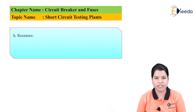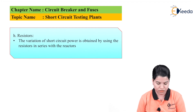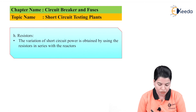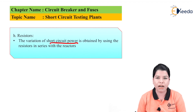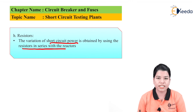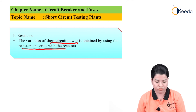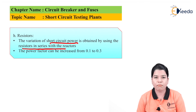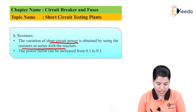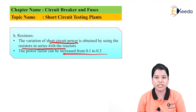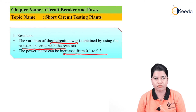Resistors are connected in series with reactors to obtain variation of short circuit power. The power factor can be increased from 0.1 to 0.3 using resistors.